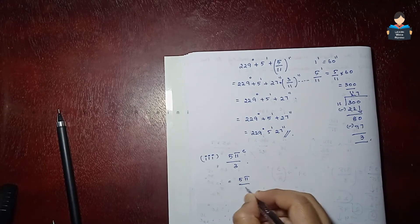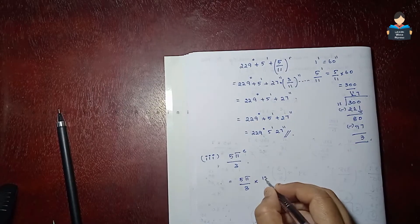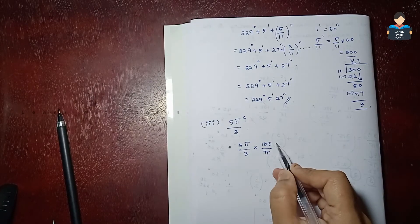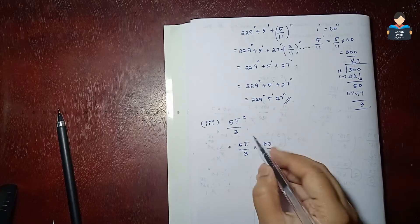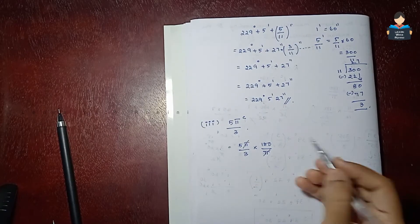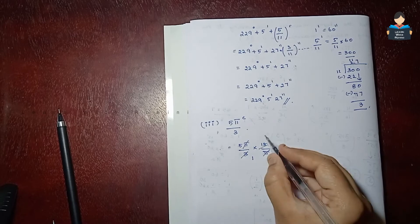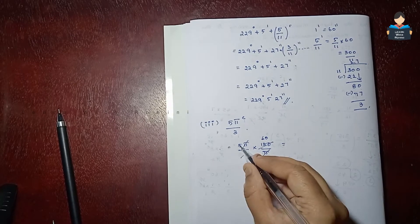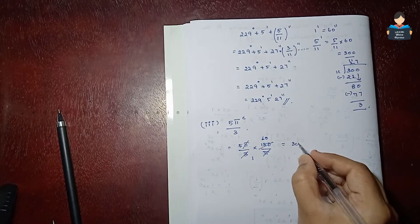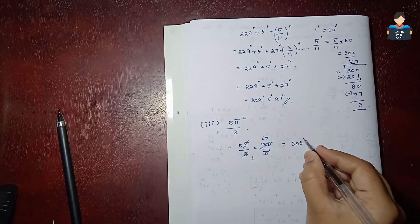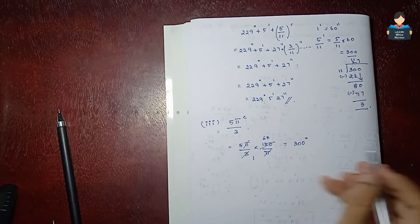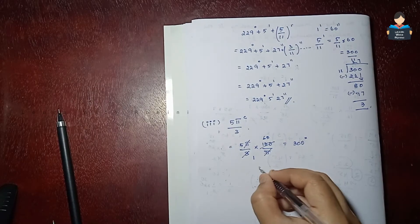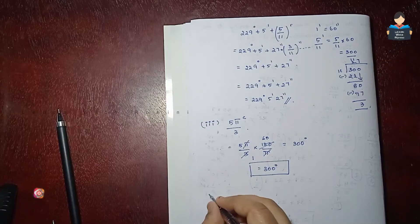To convert: 5 pi by 3 into 180 by pi. The pi cancels, and 5 by 3 into 180: 3 cancels with 180 giving 60, then 5 into 60 equals 300. So the answer is 300 degrees.